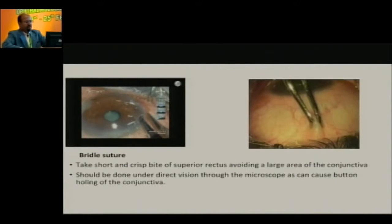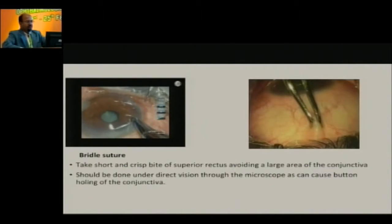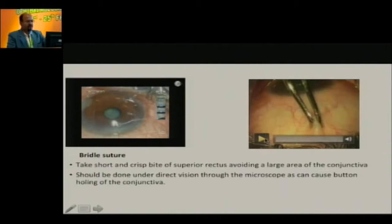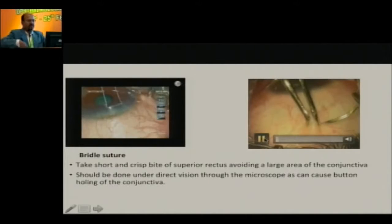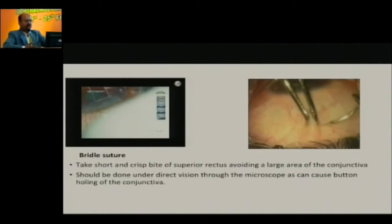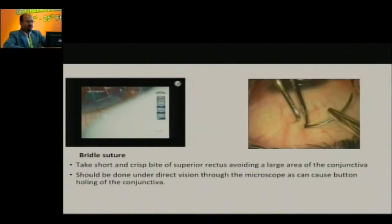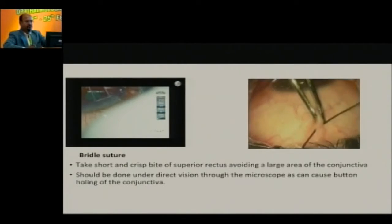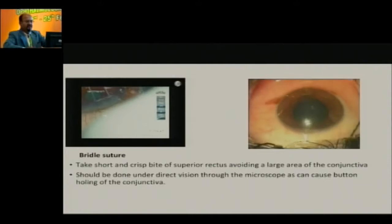We start off with a bridal suture. Nowadays almost everybody has shifted to a corneal traction suture, but if you apply a superior rectus traction suture, it's always better to do it under vision, under the microscope. Don't do it without the help of a microscope. It should be a brisk, crisp bite so that you have two holes in the conjunctiva and that's it.